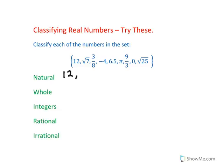We have 12, 9 over 3, and we have the square root of 25, which is equal to 5.